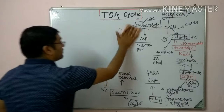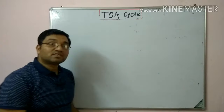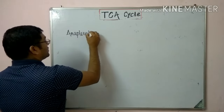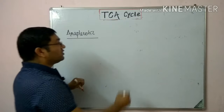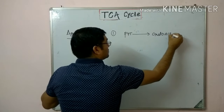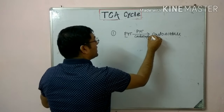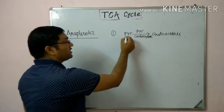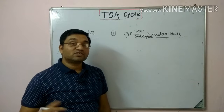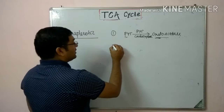Coming to the important short note: anaplerotic reactions of the TCA cycle. Anaplerosis means reactions which replenish the intermediates of the TCA cycle. The first anaplerotic reaction is formation of oxaloacetate from pyruvate by pyruvate carboxylase, which requires ATP, biotin, and CO2. Oxaloacetate is an intermediate of the TCA cycle.